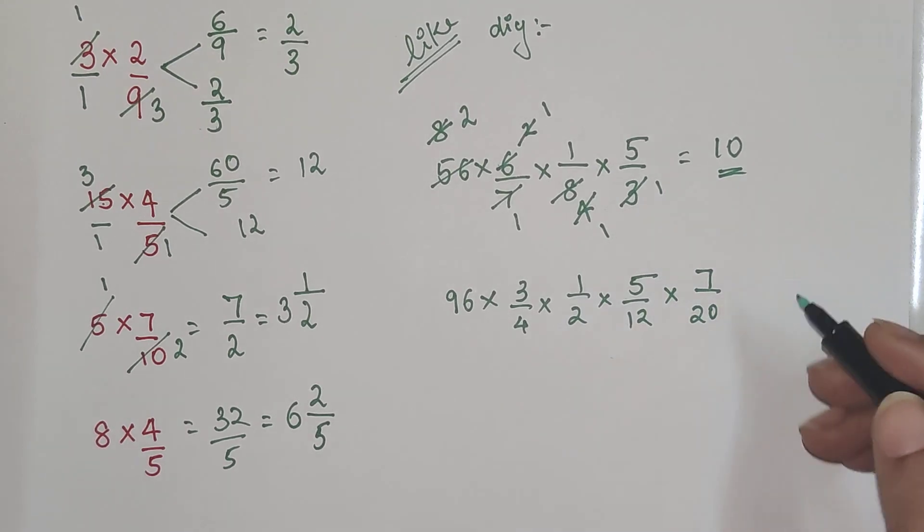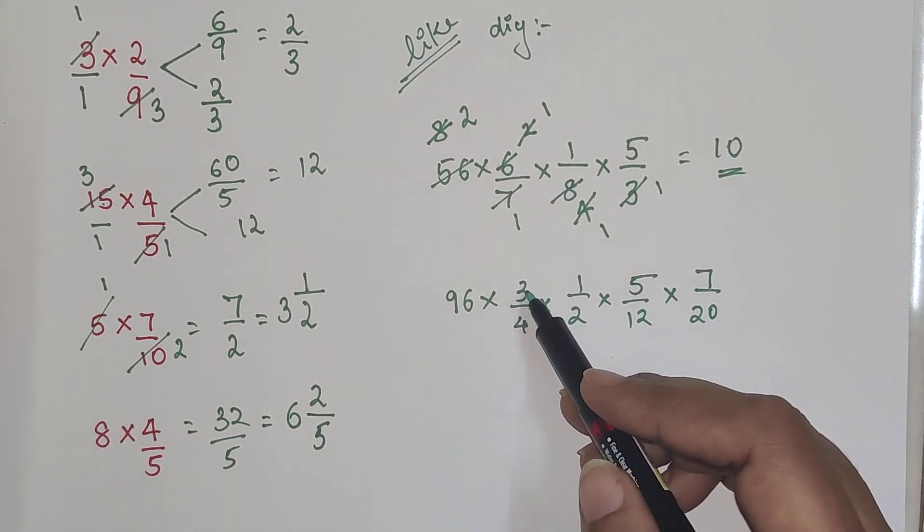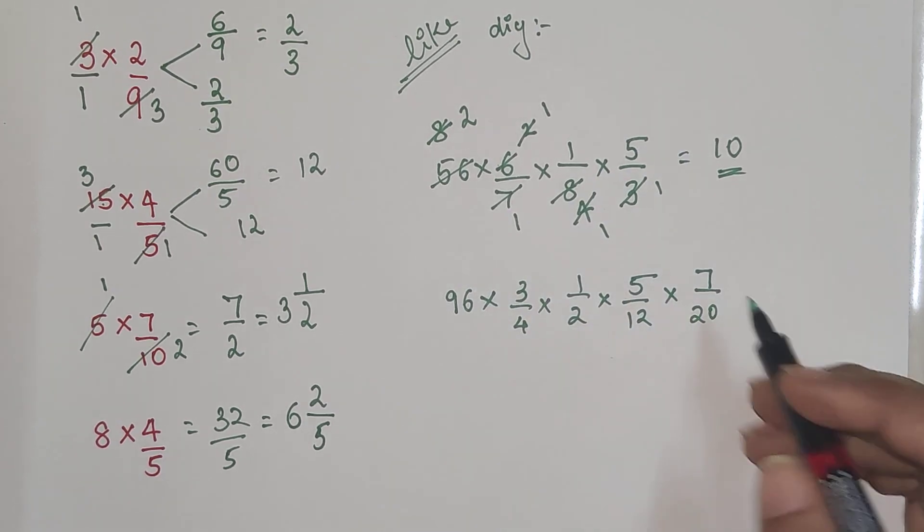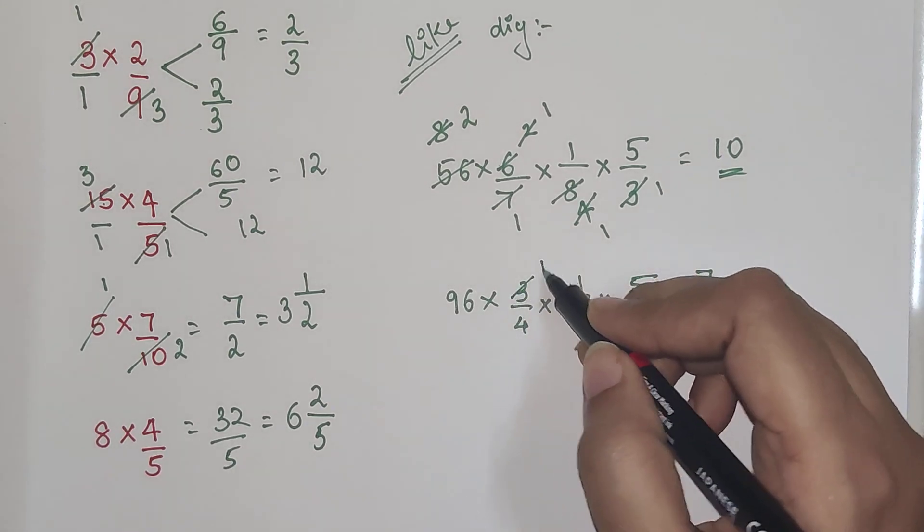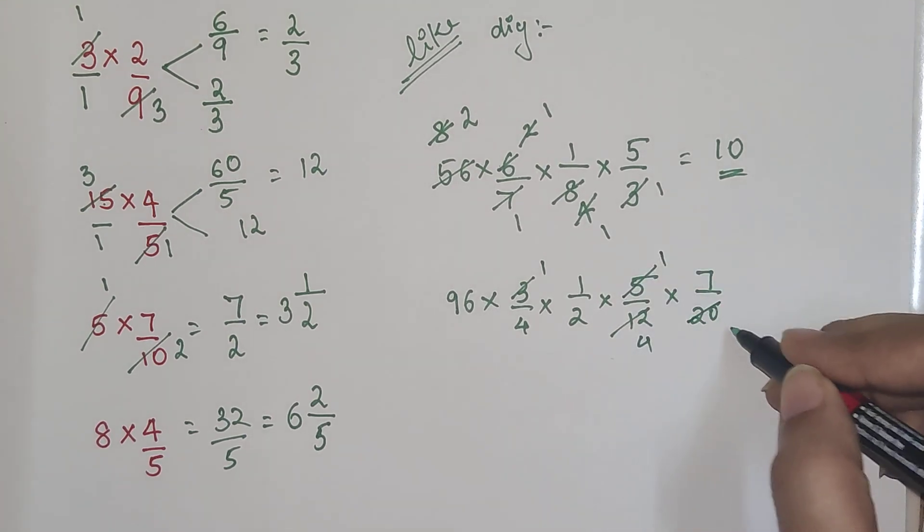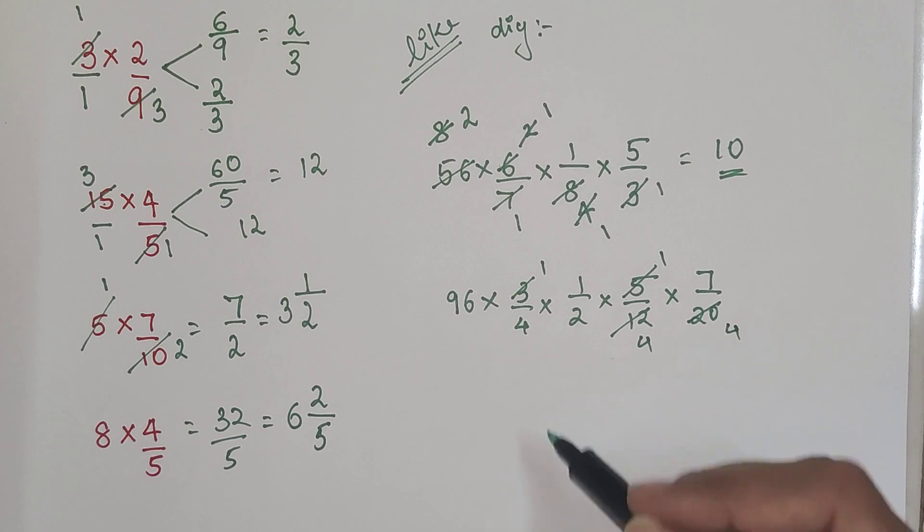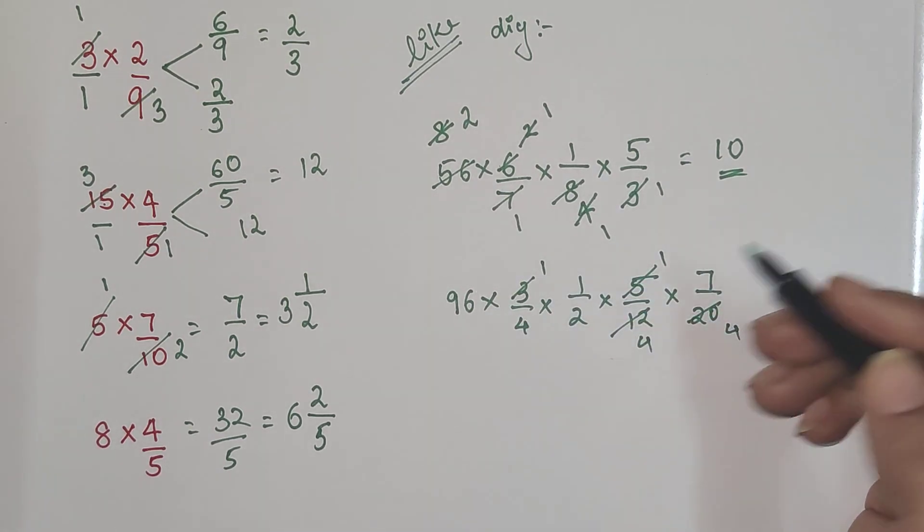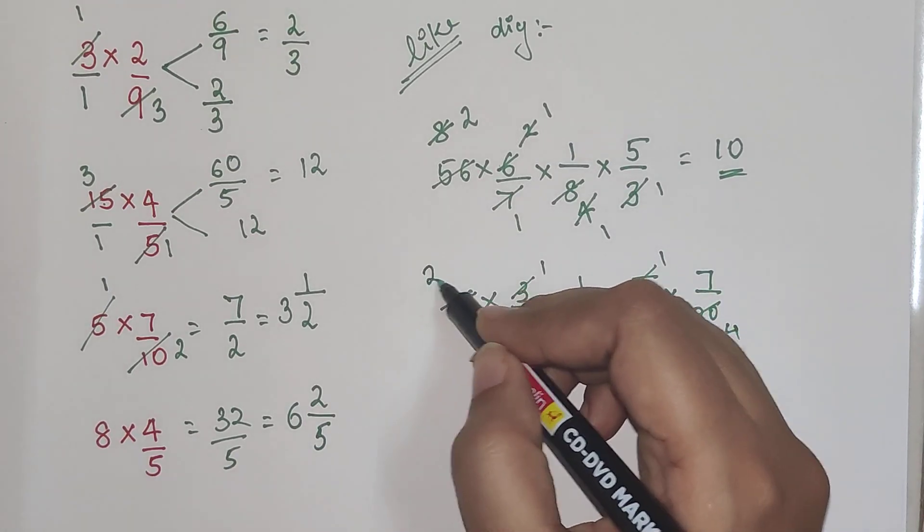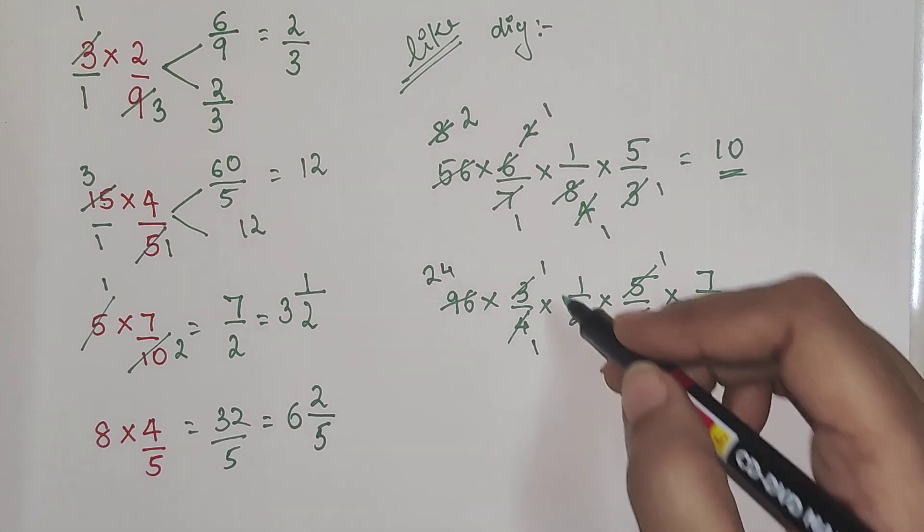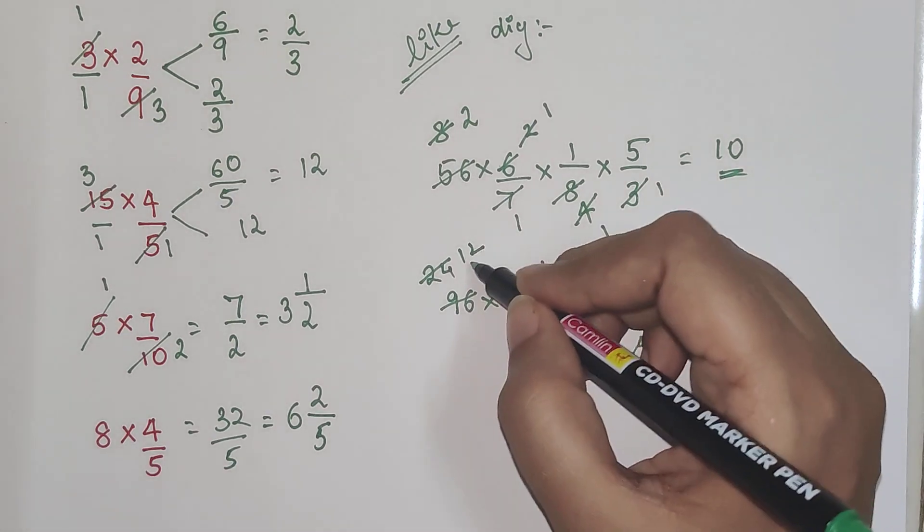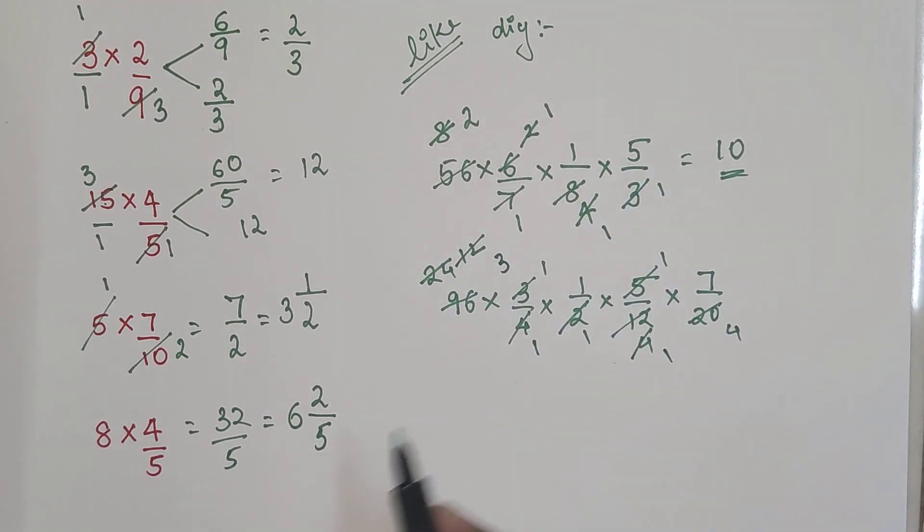Now let's look at another one. So here we have 96 into 3 upon 4 into 1 upon 2 into 5 upon 12 into 7 upon 20. So now we know that 3 ones are 3 and 4s are gets you 12. 5 ones are 5 and 4s are gets you 20. So now I don't think anything else is cancelling. So we will try with 96. So 4 ones are 4 and this gets you 2 and 24. Then again 2 ones are 2 and 12. Then this gets you 1s are 1 and 3s are 3. But that's it. Nothing else is getting cancelled.